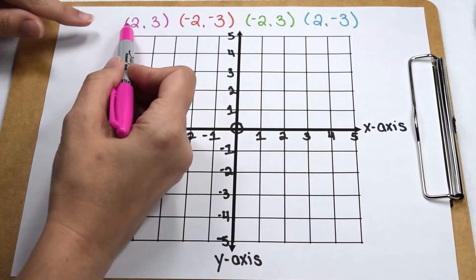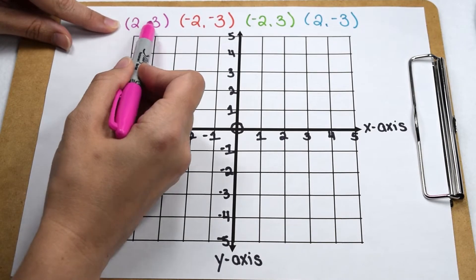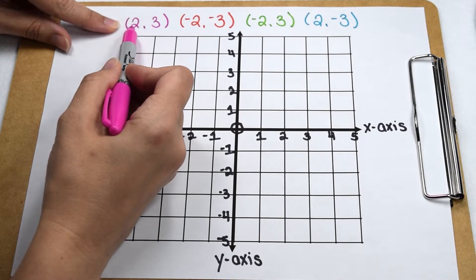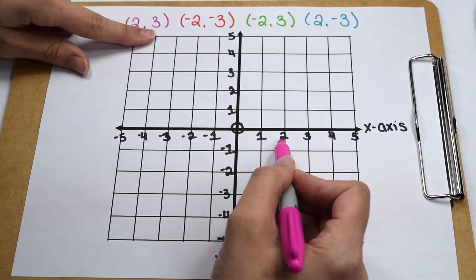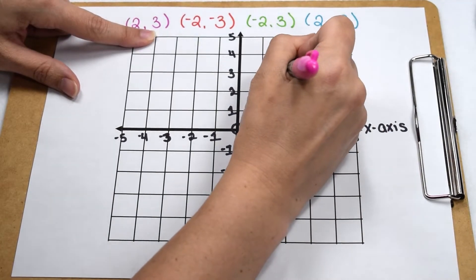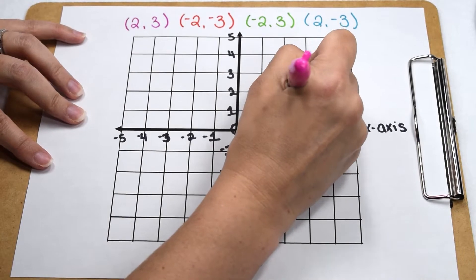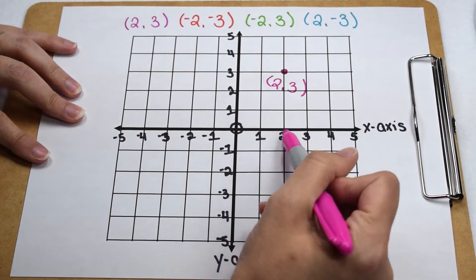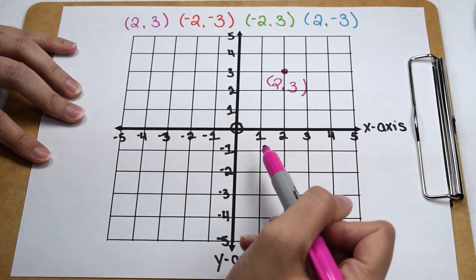We're going to start with the point (2,3). On our coordinates, we'll notice there's no positive or negative sign. If there's no sign, we can assume the value is positive. So I'm going to start at the origin and plot positive 2, which means I'm going to go two places to the right. For the y-value of 3, no sign means we can assume it's positive, which means I'm going to go up three places. When I plot the point (2,3), I notice that I'm in quadrant 1. All x-values in quadrant 1 are positive, and all y-values in quadrant 1 are also positive.